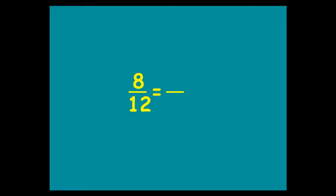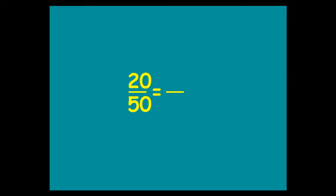In this case, what times table has stations at 8 and 12? Now, you could have a couple of answers here — you could have the 2 times table, you could have the 4 times table. The bigger the better, so go with 4. Divide top and bottom by 4, and you end up with 2 over 3 — 2 thirds. For this one, what goes into 20 and 50? Divide top and bottom by 10, and you end up with a fraction simplified as 2 fifths.